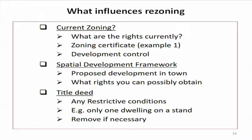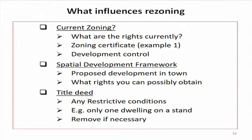The town planner will look at the spatial development framework — what does the municipality envisage for this area? They aren't going to allow you to all of a sudden start a manufacturing business if their future idea for the suburb is to stay residential. Then they have a look at your title deed, which is your document proving you are owner. There may be conditions in there which say that you may not build two units on this specific erf, and those conditions must be dealt with in a separate process.